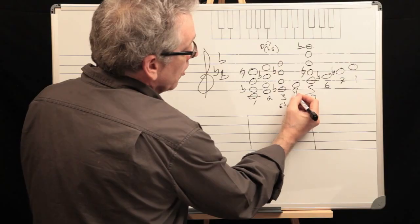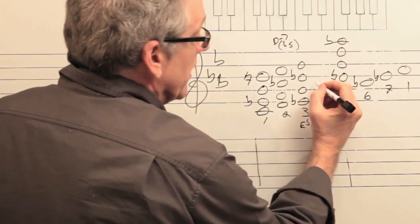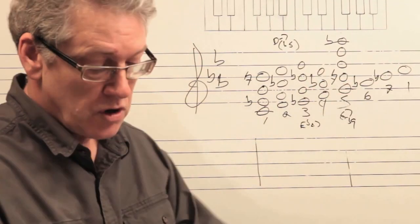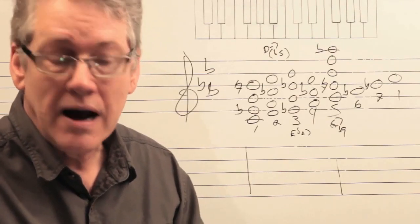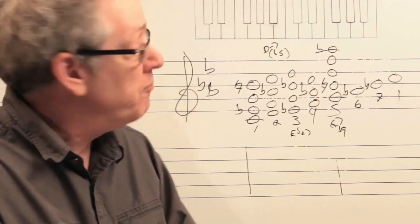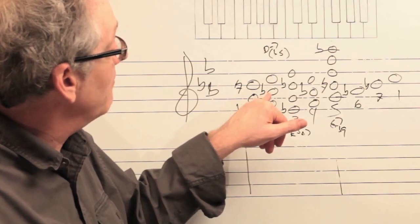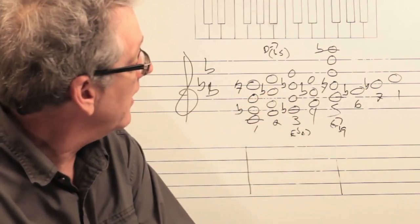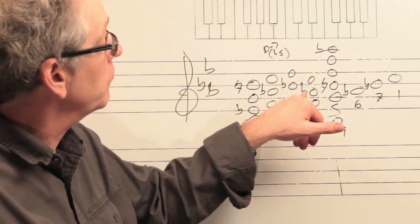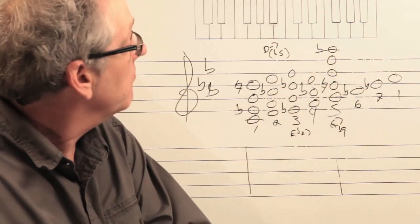So to summarize so far: the one chord is minor with a major seventh, the two chord is minor with a flat five, the three chord is E-flat major, the four chord is F minor — because of our accidentals — and the five chord is G7.